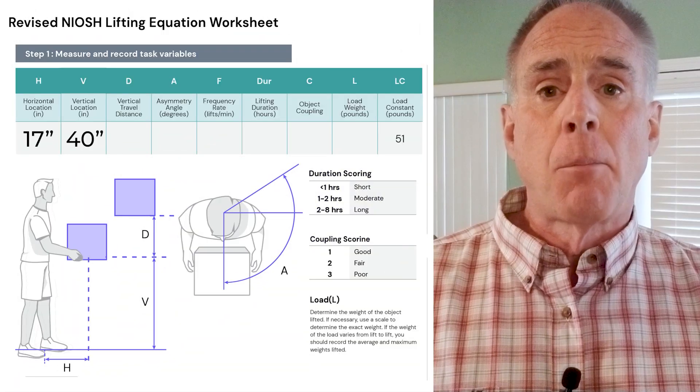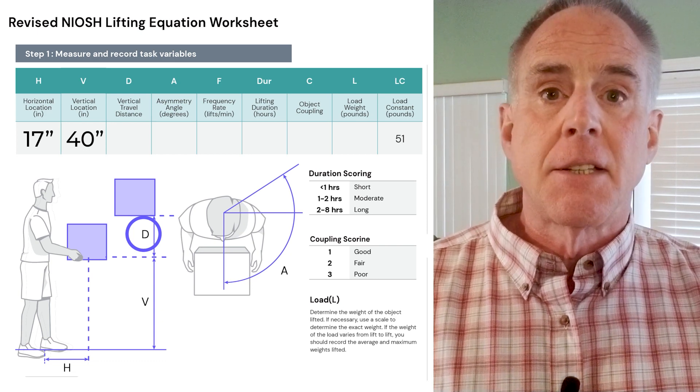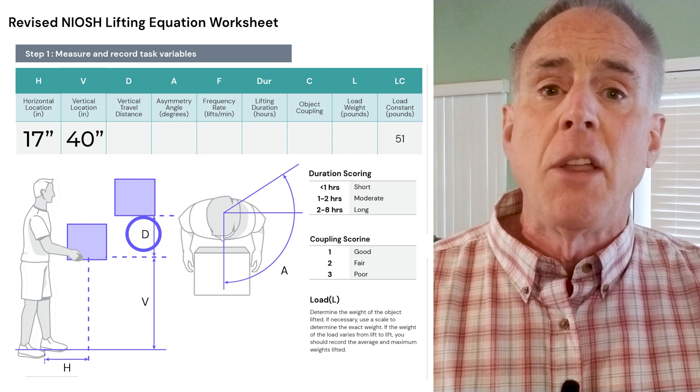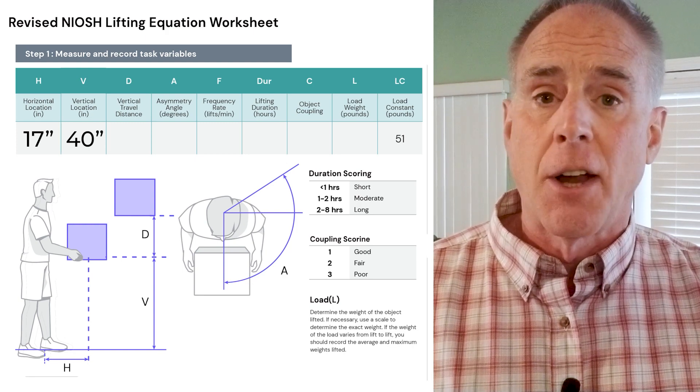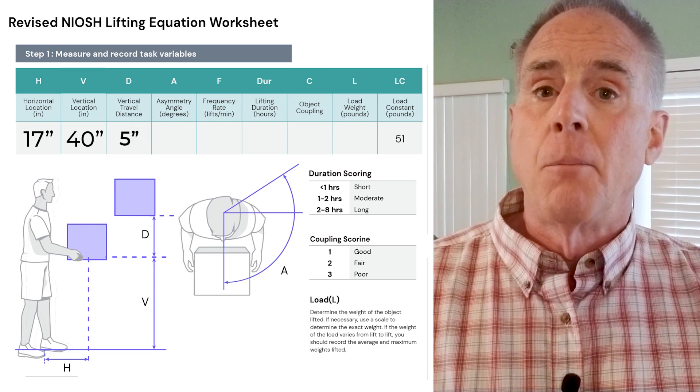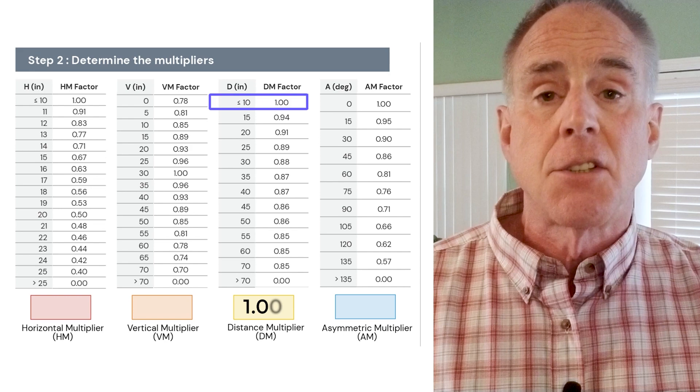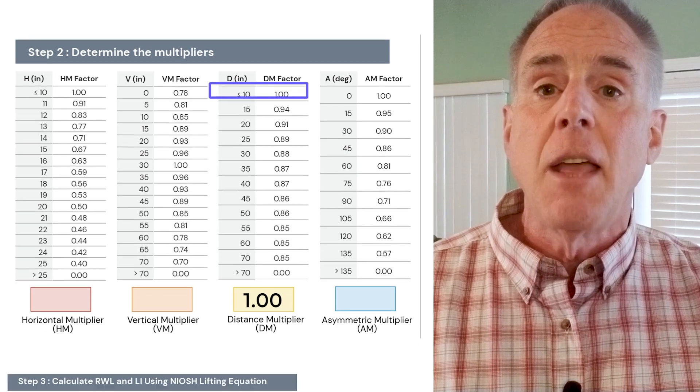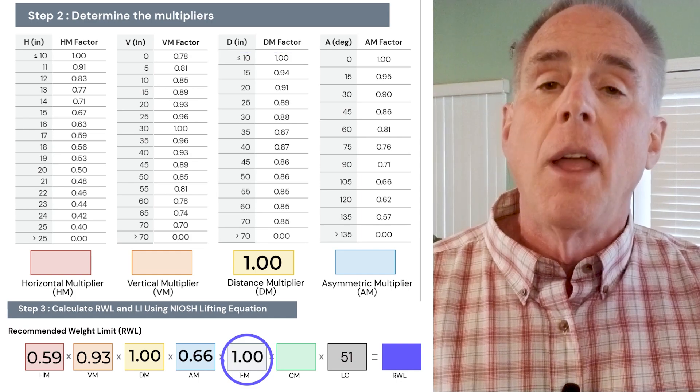Now, let's look at risk variable number three, the vertical travel distance of our calculation. Vertical travel distance of our lift is defined as the vertical distance traveled between both hands, and this goes between the origin and the destination of the lift. We collected a field measurement for the vertical travel distance in our example, and in this case, it didn't travel very far, five inches. As with each variable, it's important we plug that vertical travel distance measurement into the vertical travel distance conversion table. Then, we plug the vertical travel distance multiplier from that conversion table, and we plug the vertical travel distance multiplier, in our example, 1.0, into the equation.